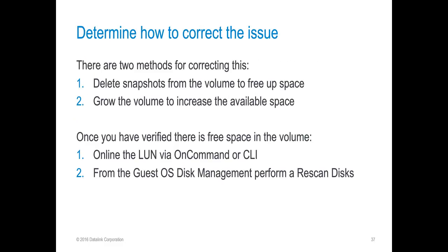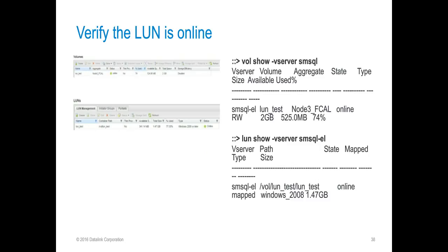So how do we correct that? At this point, we have two options: either delete snapshots from the volume to free up space, or we can grow the volume to increase the available space. The method really depends upon the needs of the business and requirements around snapshot retention for your data. If you're using SnapManager products, allowing them to manage deleting their own snapshots is preferable to deleting them from the system, because otherwise you'll have to do some cleanup around SnapManager products. Once you've freed up space using one of these methods, you can online the LUN from OnCommand or the command line, and then execute a rescan from the OS to bring the disk back online. Here we're showing that the volume is online after we've freed up space and the LUN was able to be brought back online.